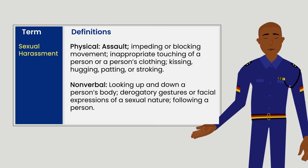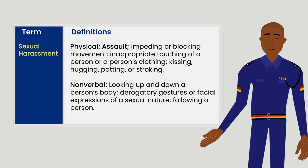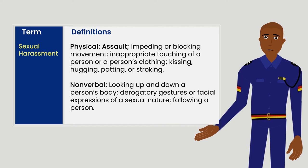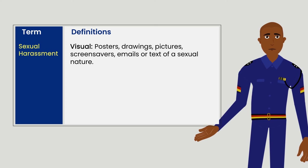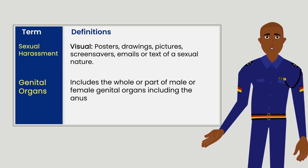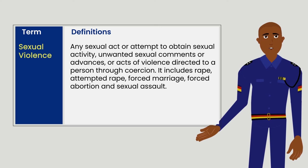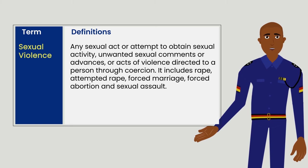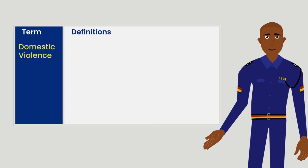Physical forms of sexual harassment include: assault, impeding or blocking movement, inappropriate touching of a person or a person's clothing, kissing, hugging, patting or stroking. Non-verbal forms include: looking up and down a person's body, derogatory gestures or facial expressions of a sexual nature, and following a person. Visual forms include: posters, drawings, pictures, screen savers, emails, or text of a sexual nature. Sexual violence is any sexual act or attempt to obtain sexual activity, unwanted sexual comments or advances, or acts of violence directed to a person through coercion; it includes rape, attempted rape, forced marriage, forced abortion, and sexual assault.